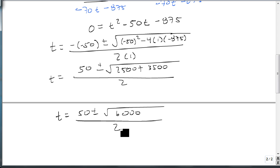So t equals 50 plus or minus the square root of 6000 over 2. And 6000 doesn't appear to be a perfect square, so let's break it down. 6000 is 60 and 100, which is 2 and 30, 2 and 15, 3 and 5.